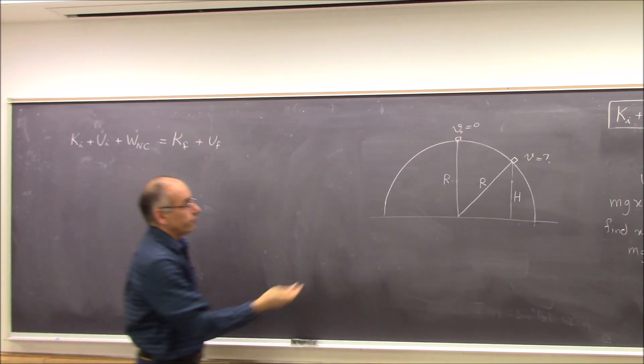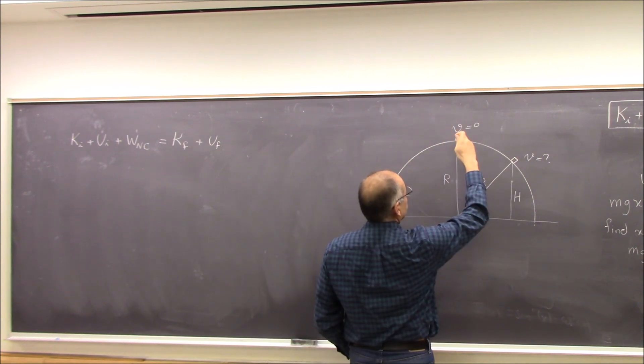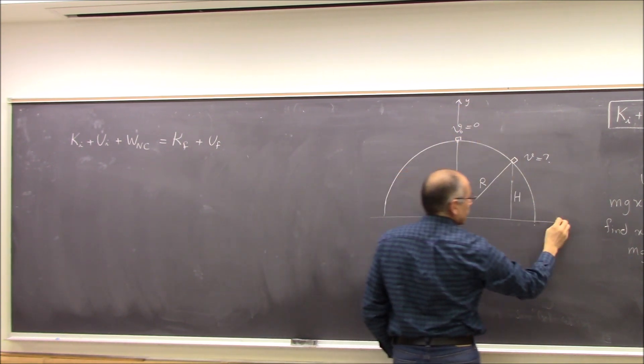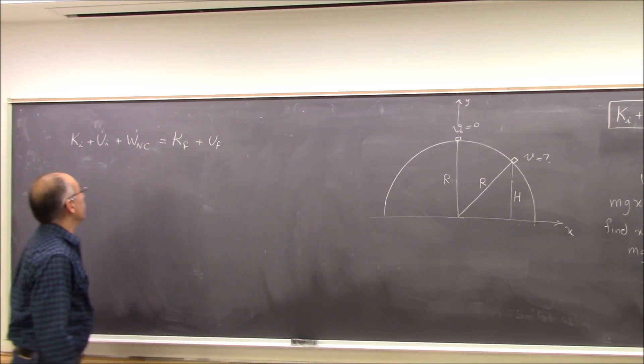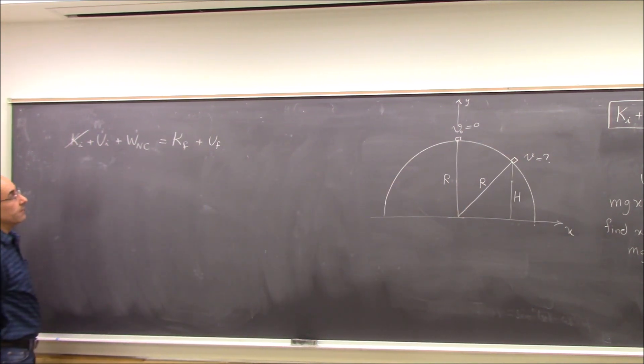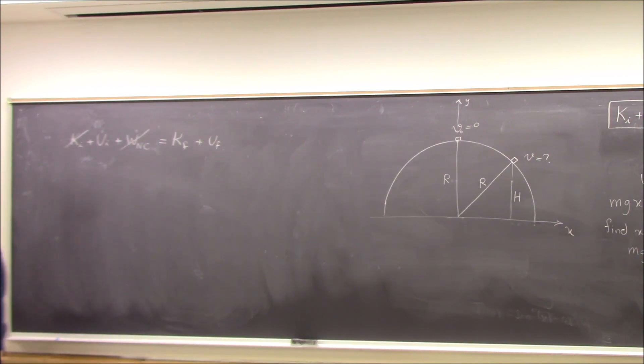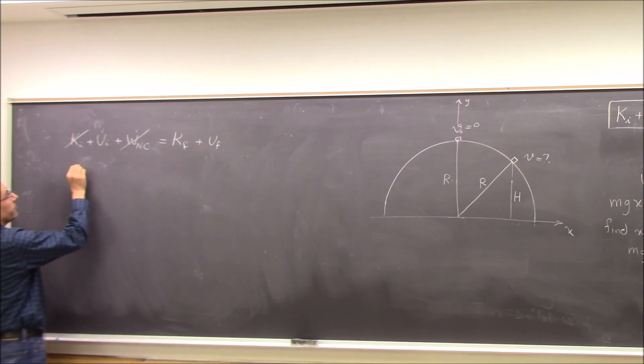If I take Y axis to be upward from this level, this is X axis, then Ki is basically zero. And because there's no friction, W non-conservative is also zero. Ui is Mg times Yi, which is R.